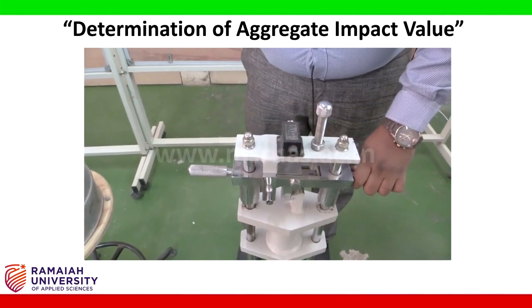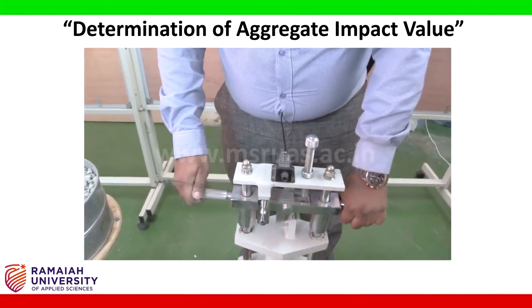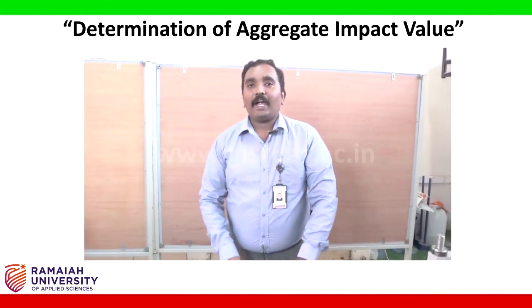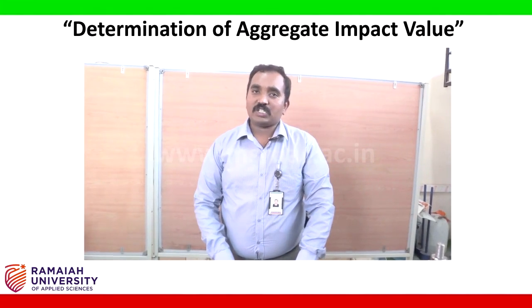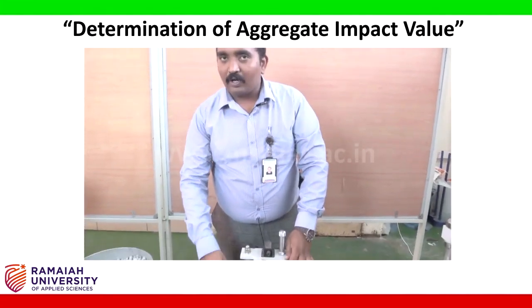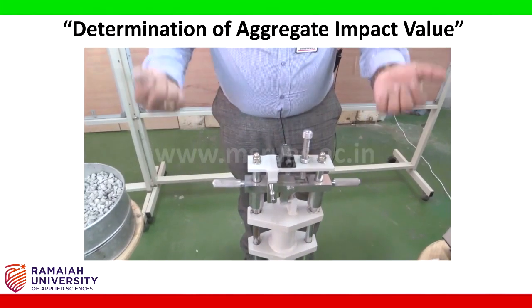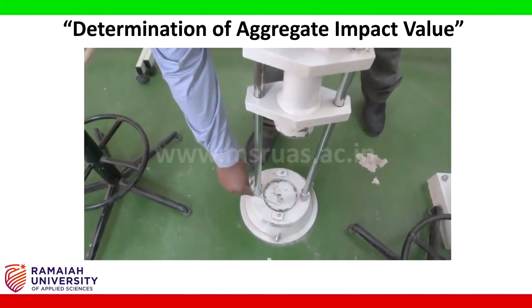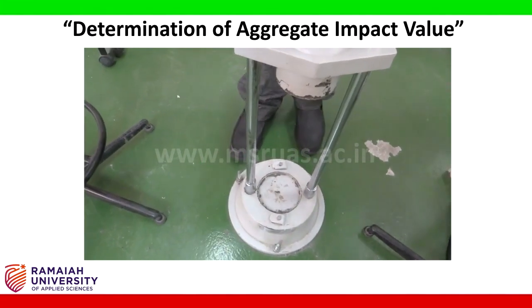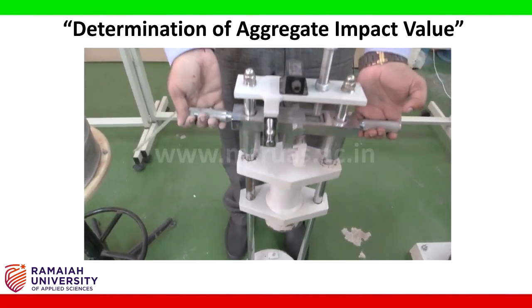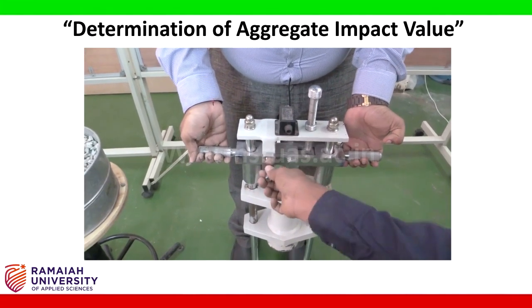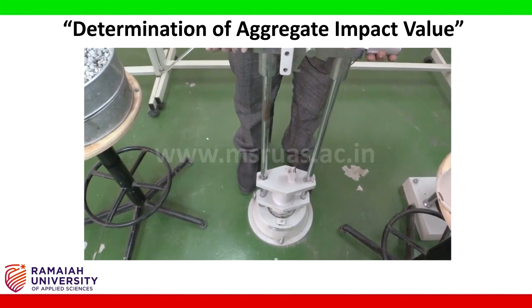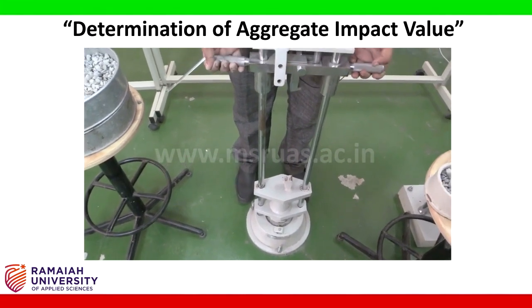Impact is the sudden application of a load. To create field simulation, we generate an impact load on this testing machine. If I remove the lock and lift it, this whole mass applies an impact load at that particular point. Just look at this with an empty sample — if I lift it, an impact energy will be produced on the sample.